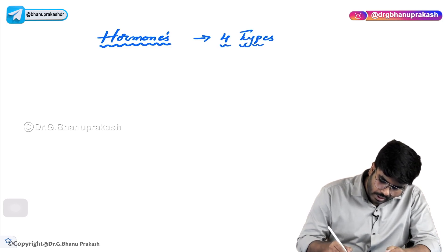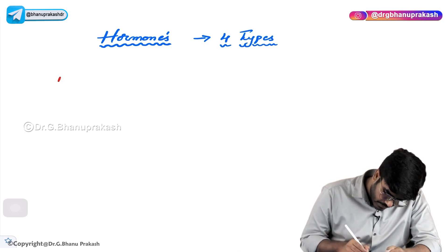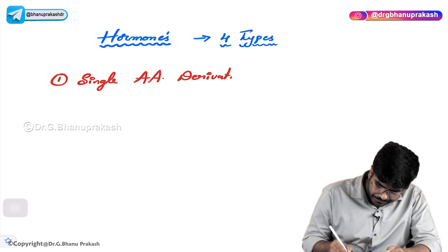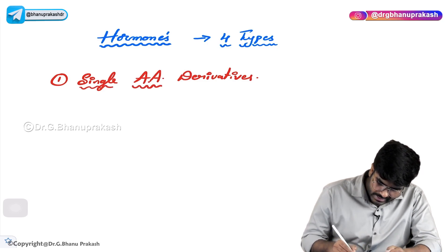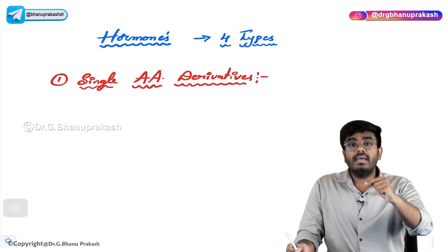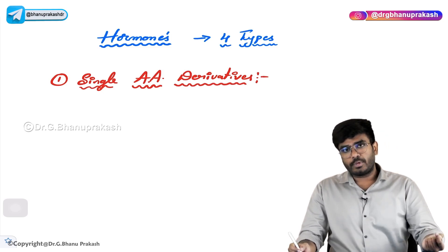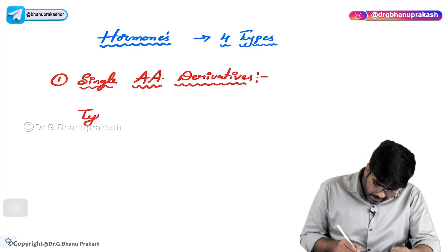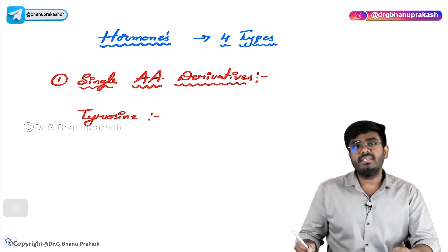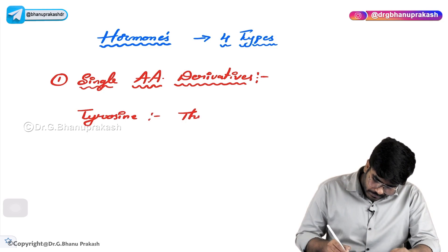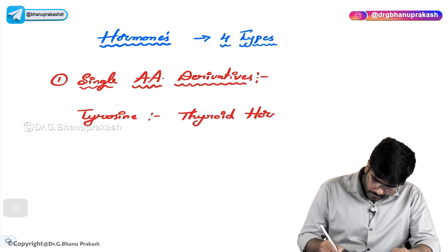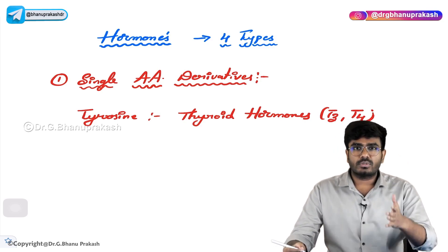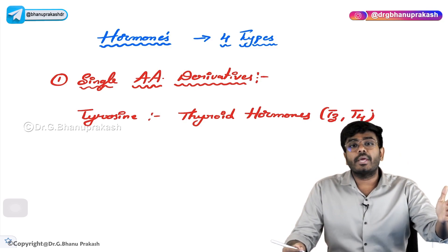The first class of hormones is called single amino acid derivatives. As the name suggests, the hormone is derived from a single amino acid — it is manufactured out of one single amino acid. For example, the amino acid tyrosine gives rise to thyroid hormones like T3 and T4, that is triiodothyronine and thyroxine. So thyroid hormones are single amino acid derived hormones.